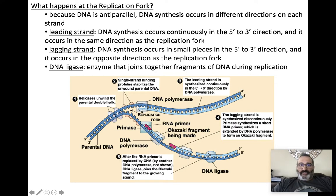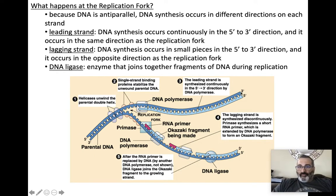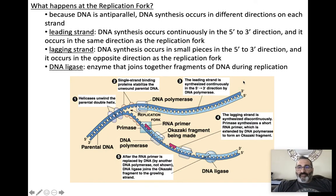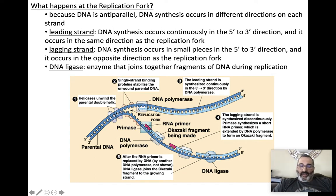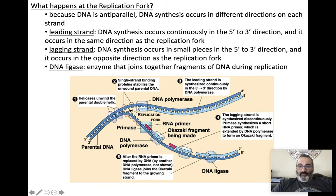What happens at the replication fork? DNA is anti-parallel — there's a 5' and a 3' end on one strand, and the other strand is opposite. DNA is constructed in the 5' to 3' direction. So the top strand is constructed continuously — as the fork opens and exposes more DNA, DNA polymerase keeps moving along adding nucleotides. This strand, produced continuously in the 5' to 3' direction toward the fork, is called the leading strand.